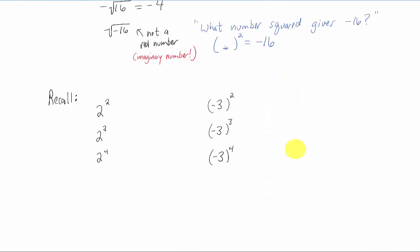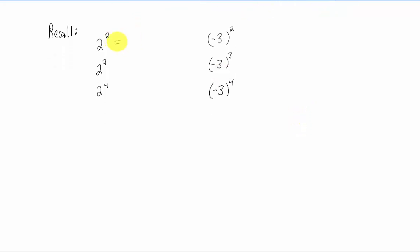Okay, let's expand on this a little bit. And remember that two squared is going to be two times two, which is four. Two cubed is going to be two times two times two, which is eight. Two to the fourth power is going to be two times two times two times two, which is 16.